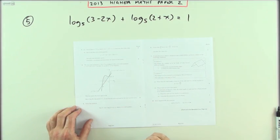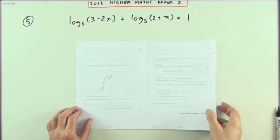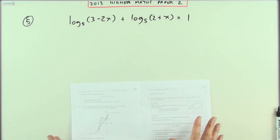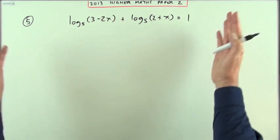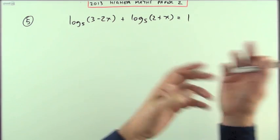Number five from the 2013 Higher Maths paper to a little log equation. If you're going to get logs at all in this, this is probably what you're most happy to see because you know immediately what to do with this. You gather up your logs and you throw them away.